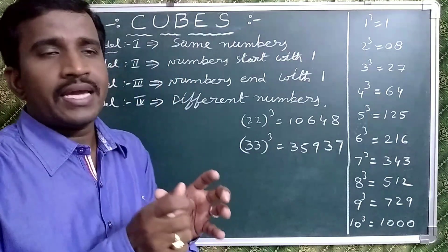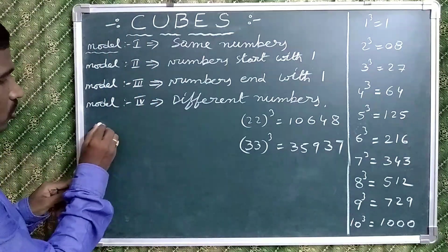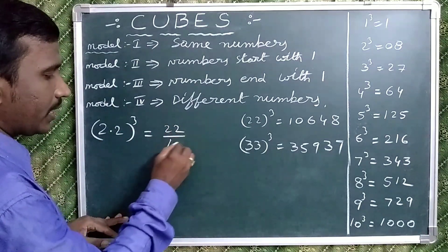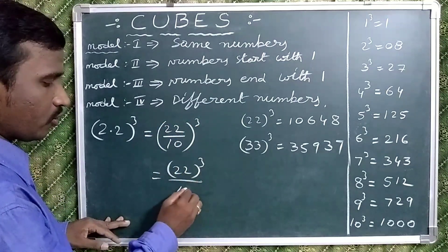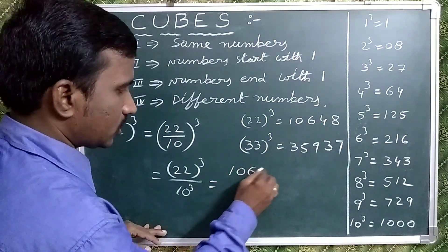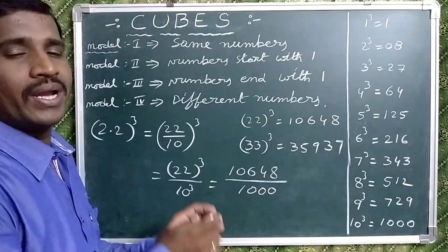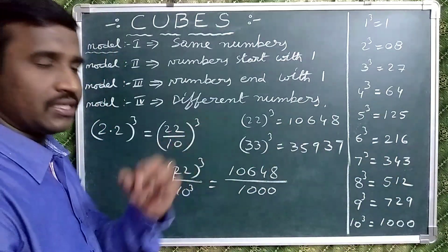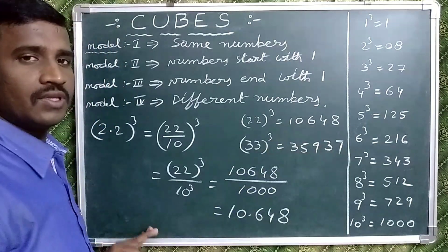Now observe: in the case of the first model, suppose 2.2 whole cube. 2.2 whole cube can be written as 22 divided by 10, whole cube. That means 22 cube divided by 10 cube. 22 cube you already know the shortcut — that's 10648. 10 cube means 1000, which has 3 zeros. That's why the decimal point moves right to left 3 digits. So the answer is 10.0648.